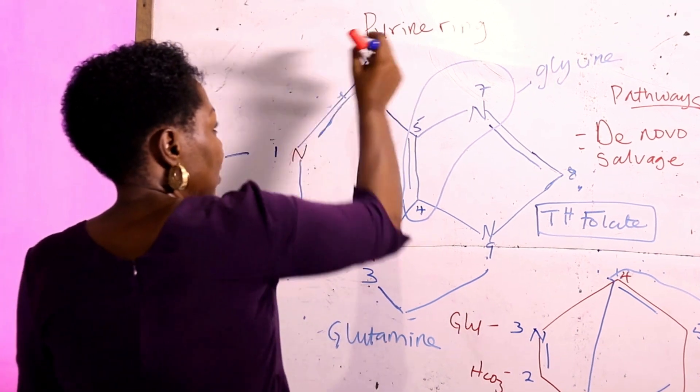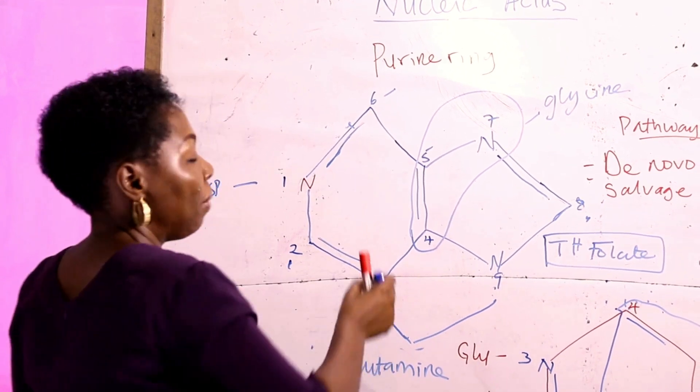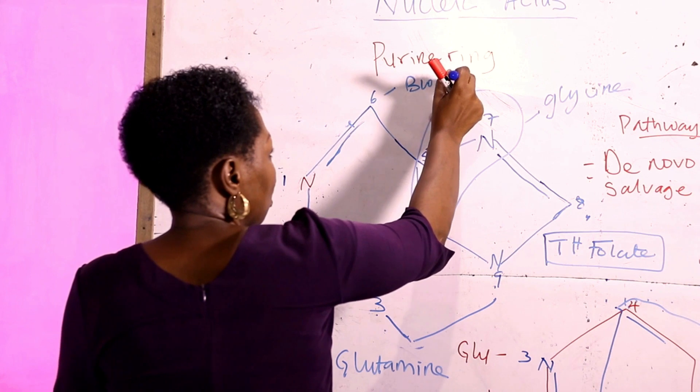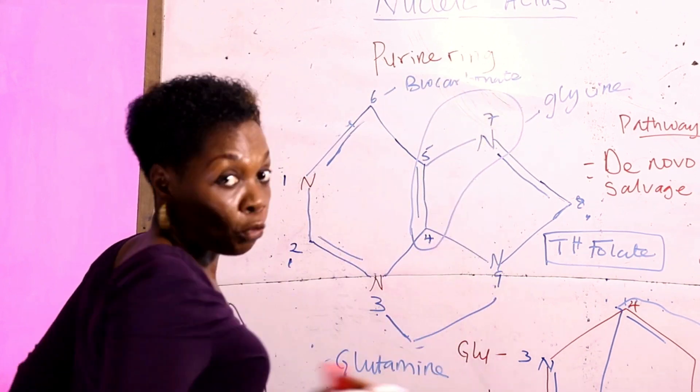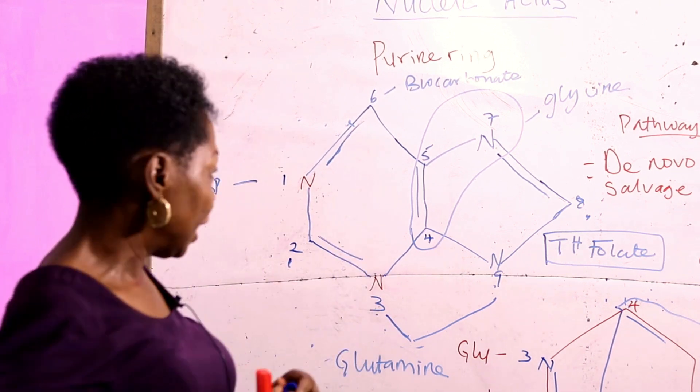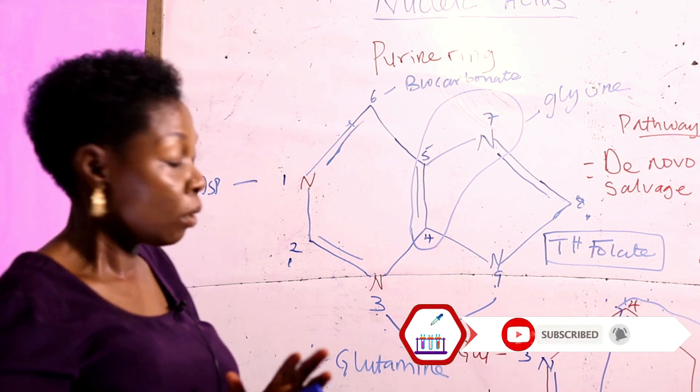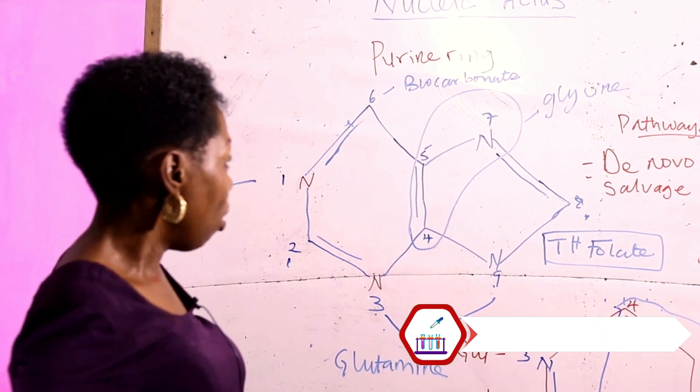Position 6 is supplied or furnished by the biomolecule bicarbonate, which comes from CO2. So now, let's go over it again. You have the sources of the precursor molecules for the purine and the pyrimidine ring.